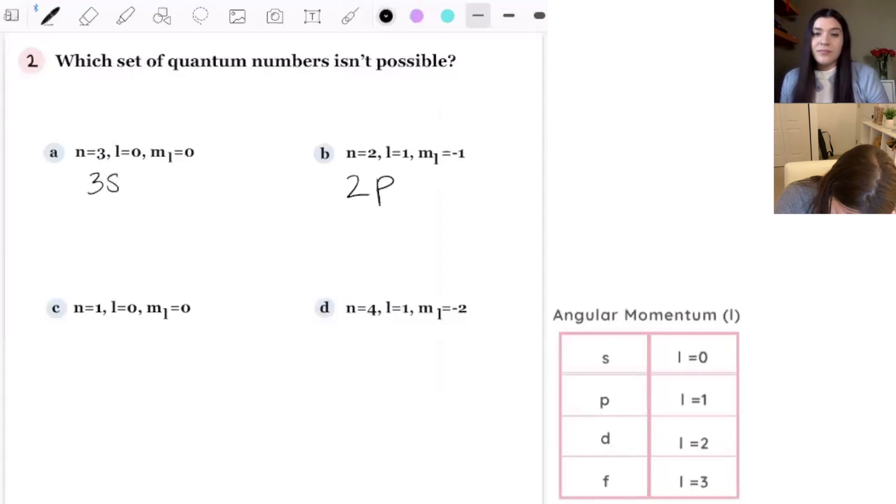Negative 1 is... Why do I keep getting confused with that one? I don't know. Remember, m sub l, we're looking at whatever the l value is. It's dependent on what the l value is because we're going from the negative l value, all the numbers in between, and then to the positive l value. Oh, so this is possible then because it's 1. So it's going to be negative 1, 0, 1. Yeah. Okay. So that's not it. Right.